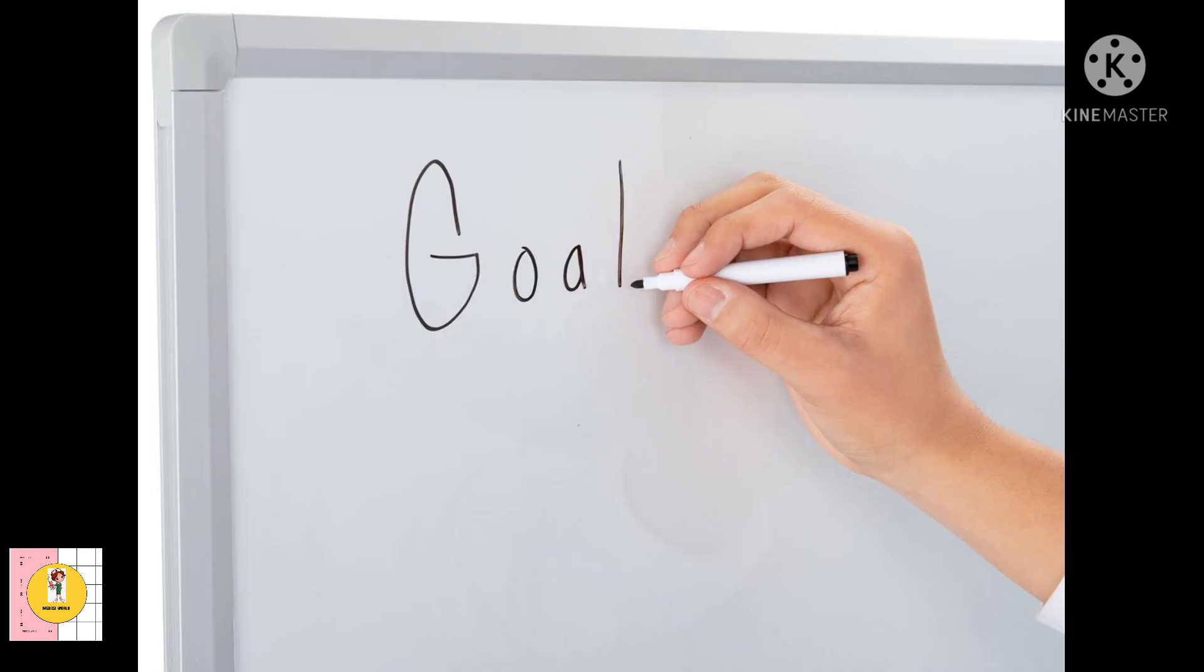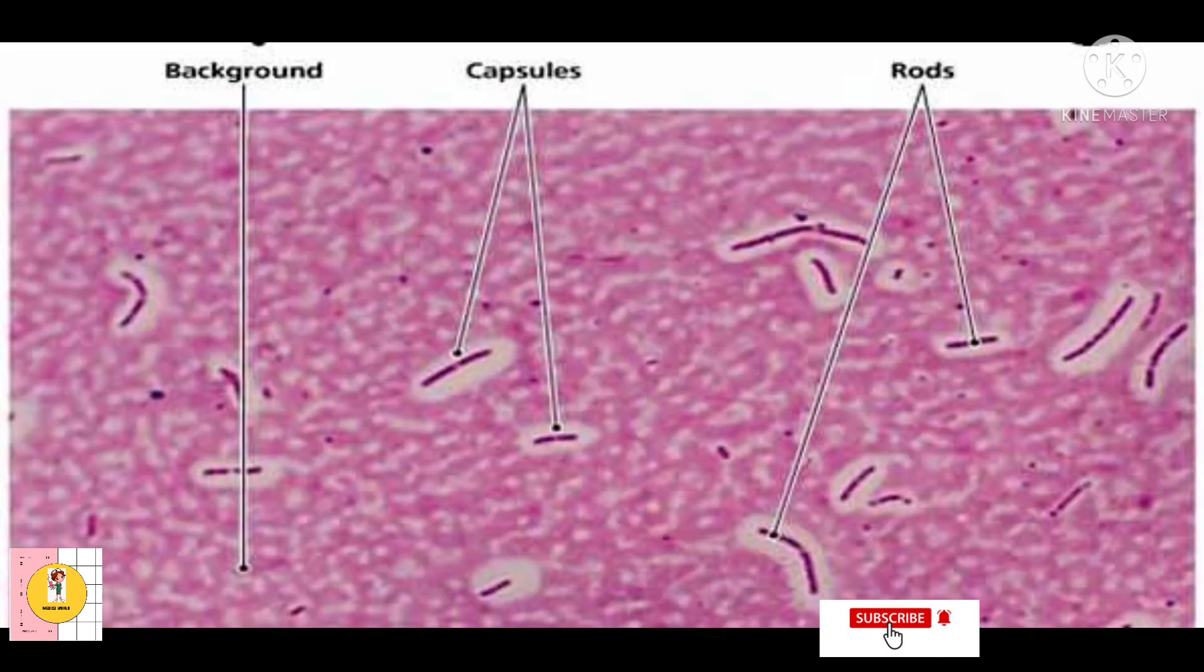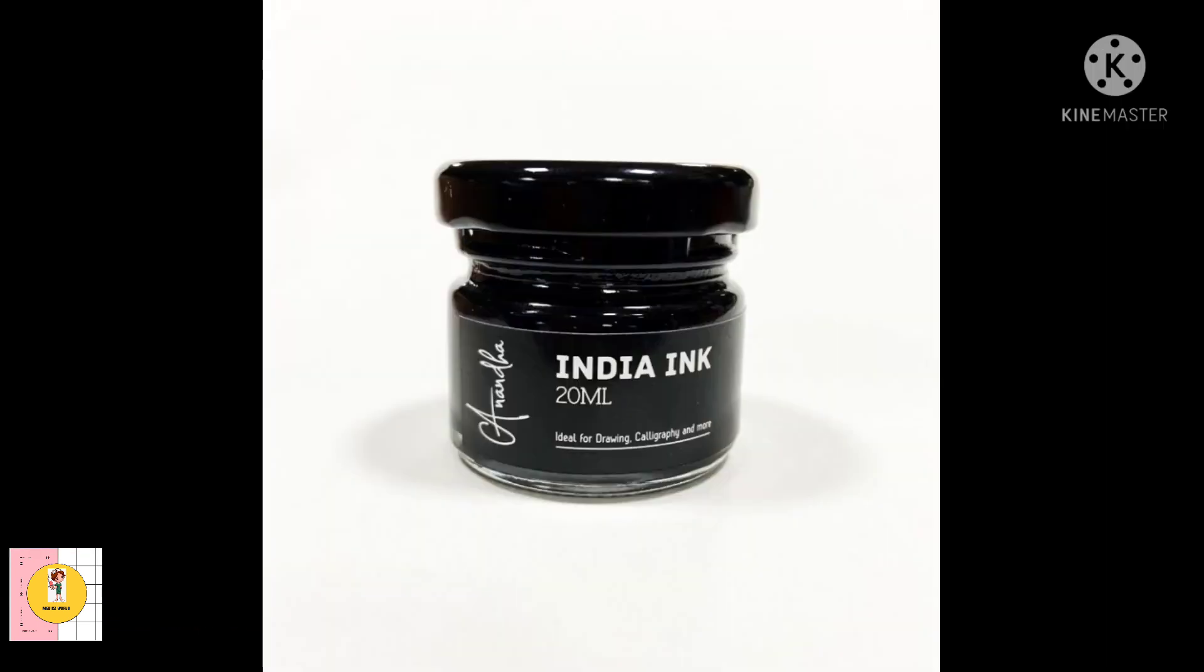So same concept here. In this technique, the background will be colored or stained, but the cells in the background will not be stained. That is, it will make them visible. So what are the stains we are using? India ink or nigrosin.